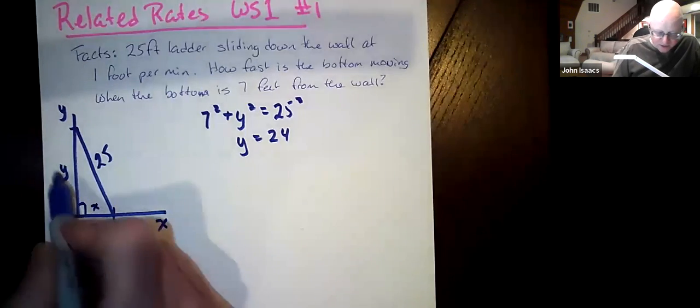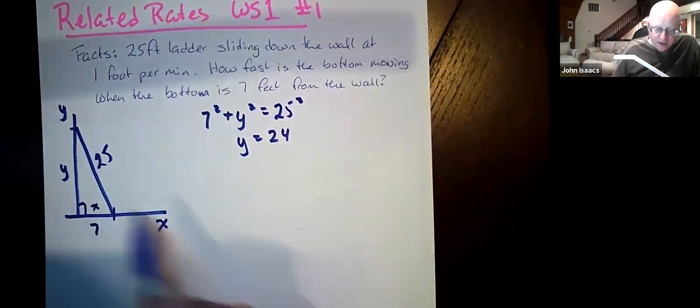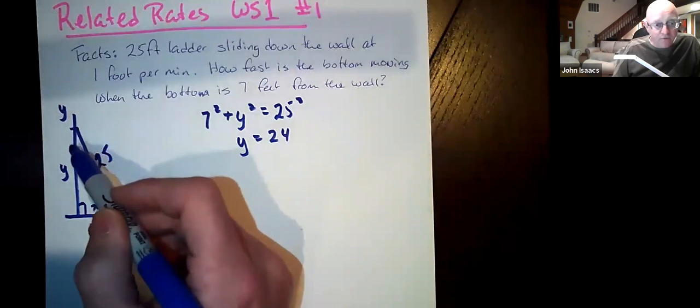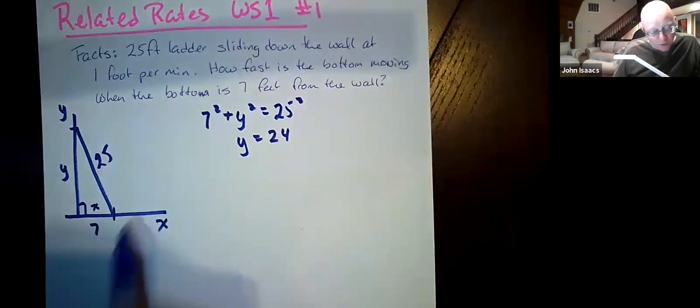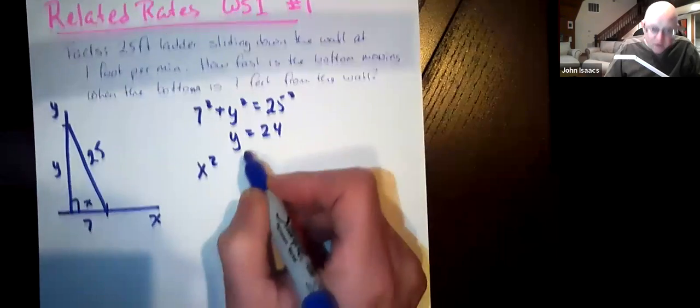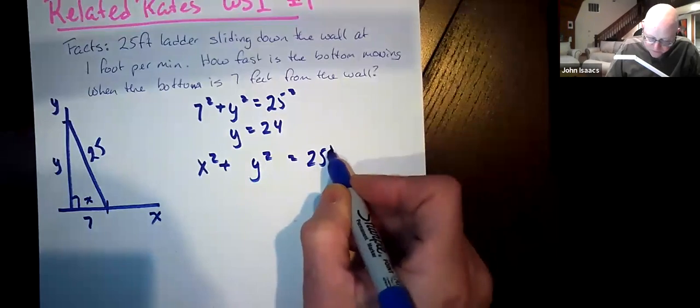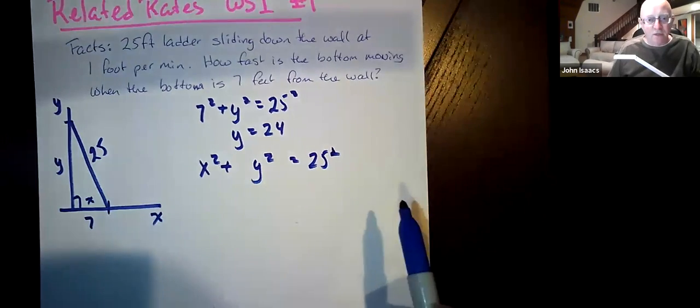So this side is x, this side is y. We know that y is changing at negative one foot per minute, but we don't know what x is changing by. But we do know that x² + y² = 25². Because again, that's the Pythagorean theorem in this case.